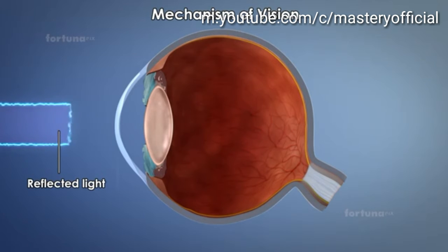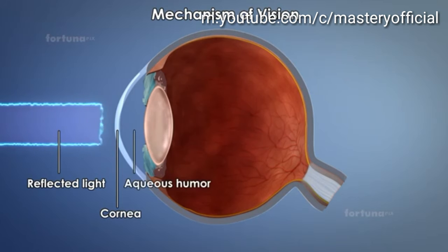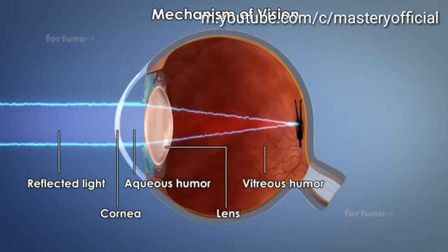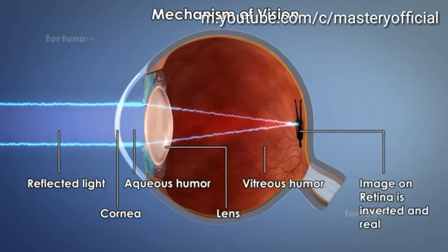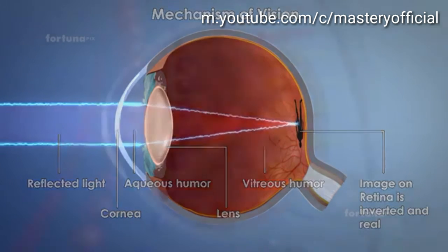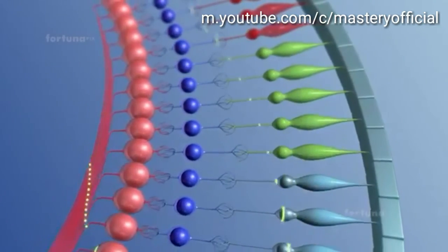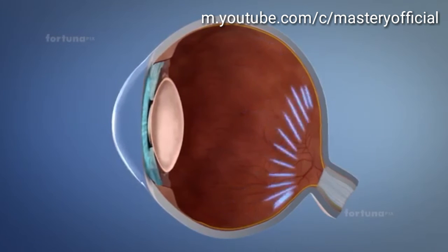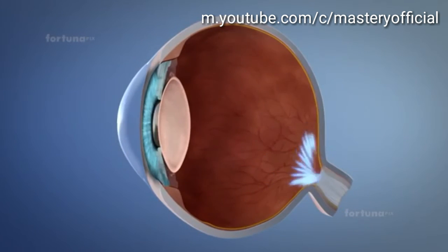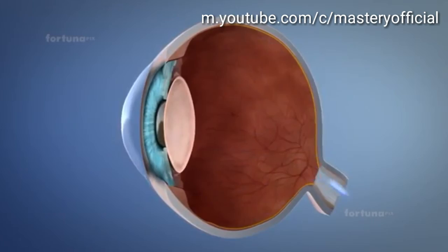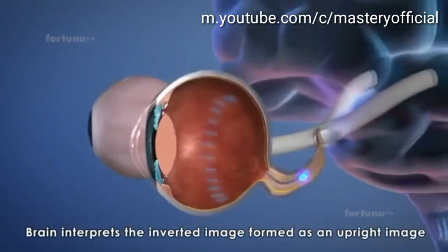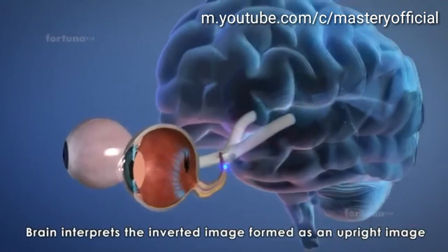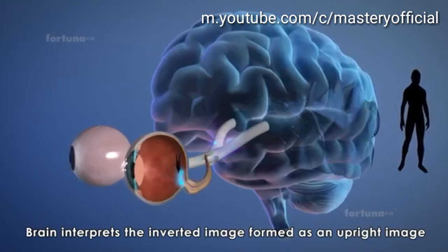Mechanism of vision: the reflected light rays from an object enter the eye through the cornea, aqueous humor, lens, and vitreous humor. The image formed on the retina is inverted and real. The photoreceptors convert light energy into nerve impulses, which the optic nerve carries to the central nervous system. Our brain then interprets the inverted image as an upright image of the object.